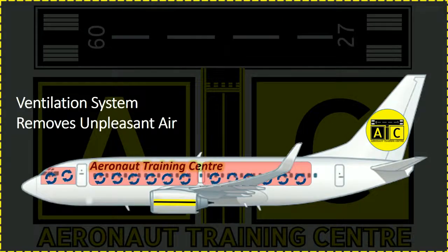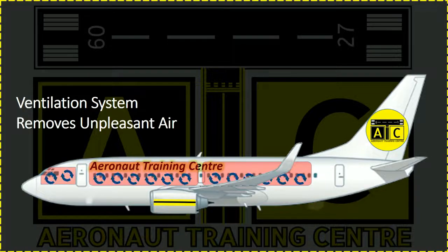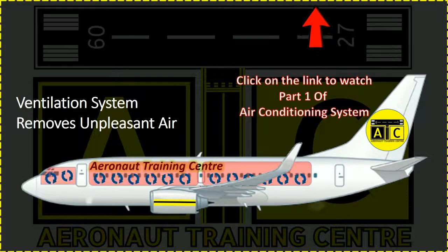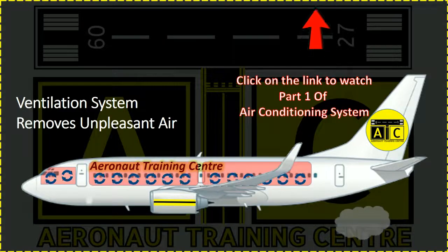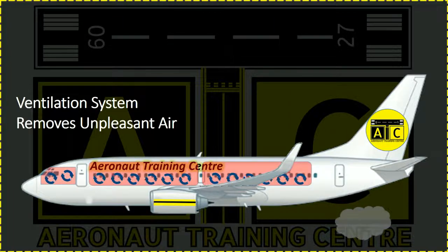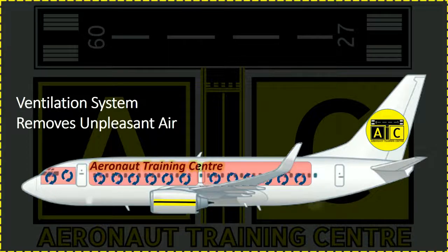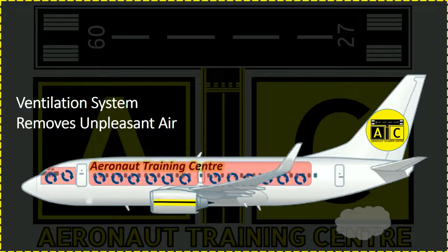Another process is the ventilation system. As mentioned in part 1, the ventilation system removes unpleasant air from the galleys and lavatories in the passenger cabin. By creating a pressure differential, air always flows from high to low pressure areas, creating a form of suction. The ventilation system takes advantage of this principle and ducts all unpleasant air out of the airplane.